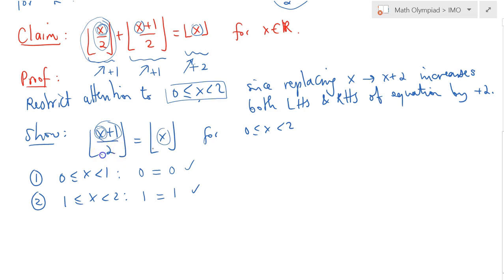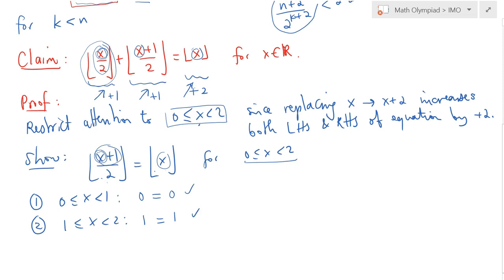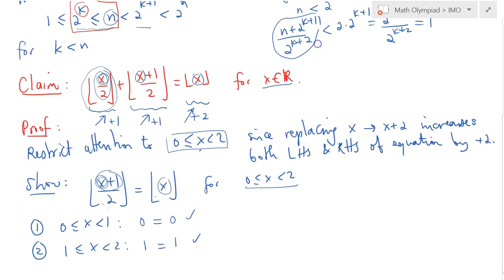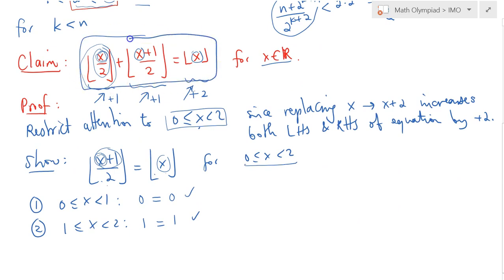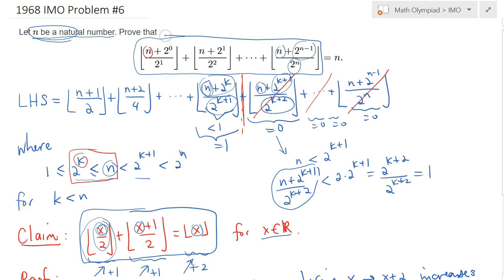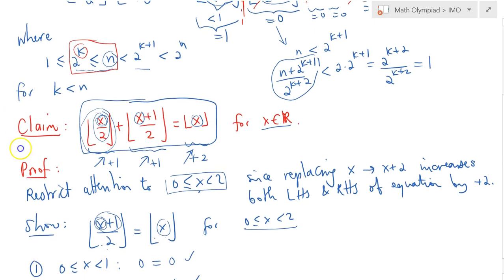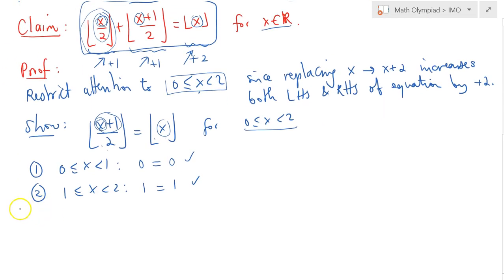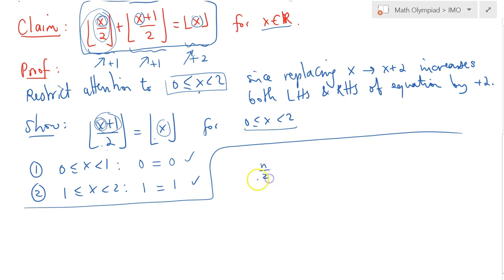This proves that these two are equal in that range, and you can easily extend this range to cover all real numbers. Since our question is just based on natural numbers, this claim is true. Now we can use this claim to obtain the summation. The idea is to write this equation repeatedly to come up with a telescoping argument. Let's start by substituting x with n: floor of n over 2 plus floor of n plus 1 over 2 equals n.